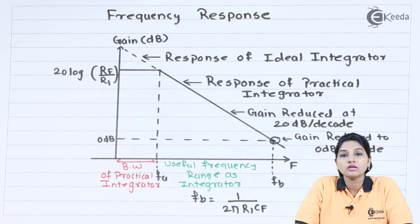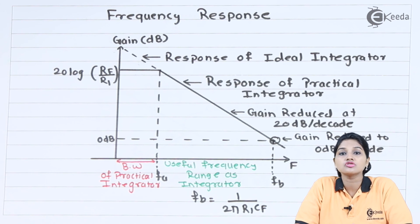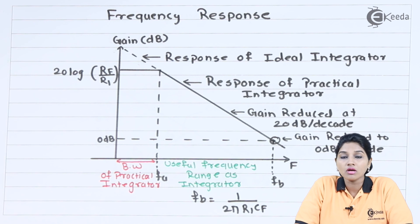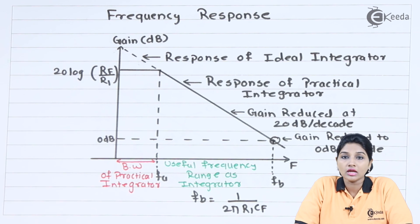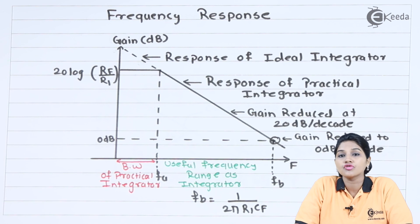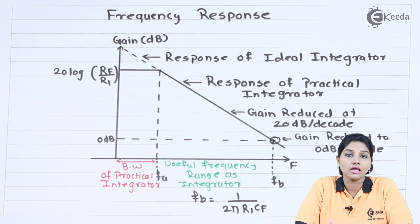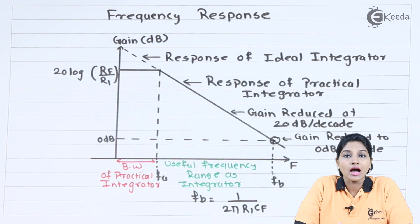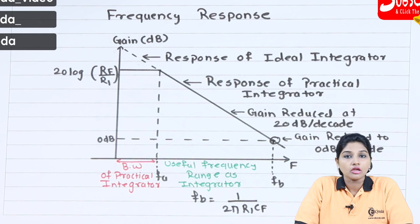So I hope you understand this topic of practical integrator, in which the disadvantages of the basic integrator are overcome by introducing resistance RF across CF. Due to this, the gain of the circuit is controlled, the error voltage produced at the output of the basic integrator is reduced, and because of the introduction of RF the circuit can be useful in many practical applications. Thank you very much for watching this video.